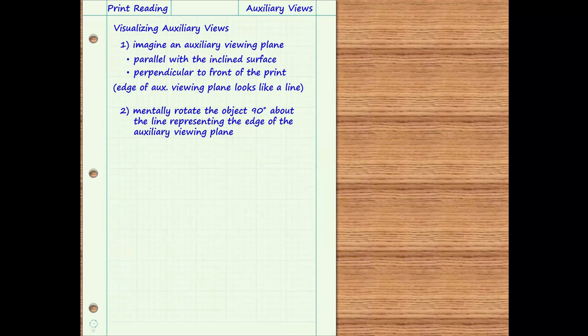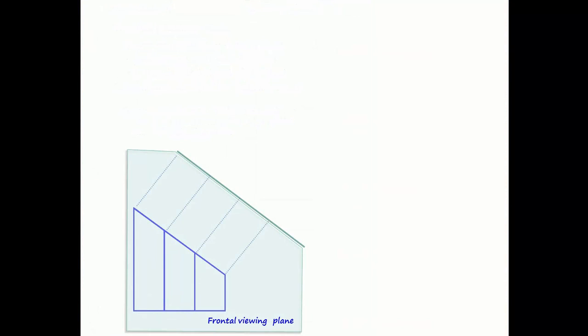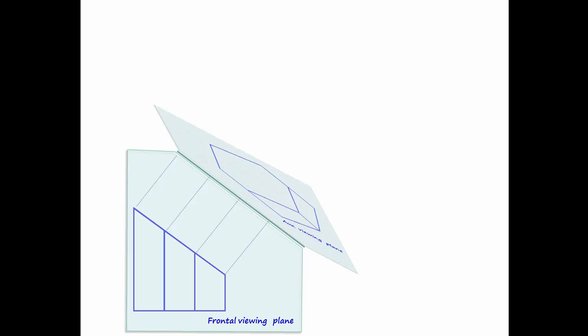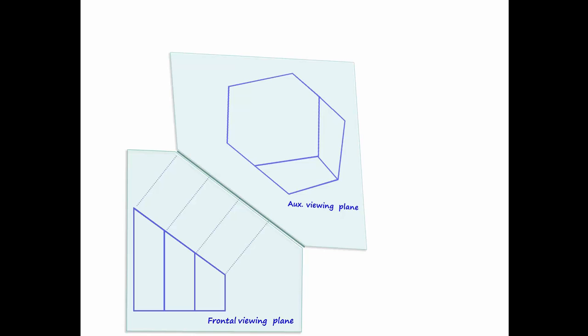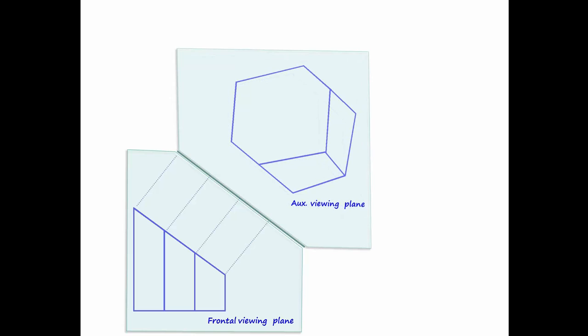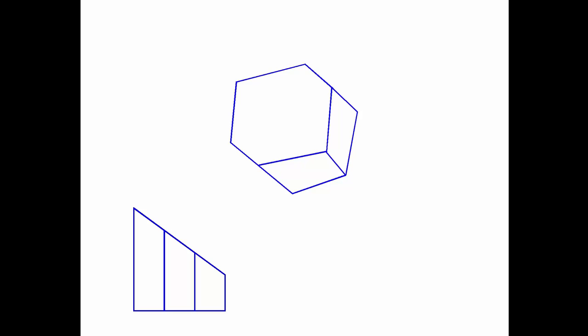Some people find it easier to visualize the auxiliary viewing plane swinging around as if there is a hinge where the imaginary frontal and auxiliary viewing planes meet. As the auxiliary viewing plane rotates, it carries the auxiliary view along with it. Either method of visualizing the auxiliary view will yield the same result.